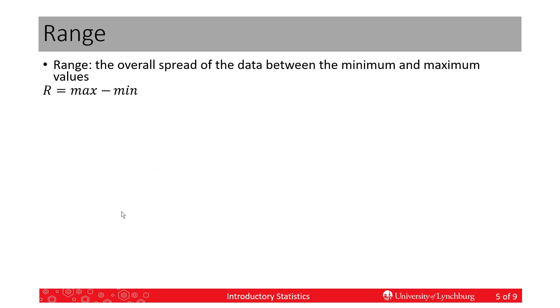Let's start with the simplest way of describing the variation in the data, and that's called the range. The range is simply the maximum or largest value minus the minimum or smallest value. It's very easy to calculate, but we'll learn the disadvantage in just a minute.